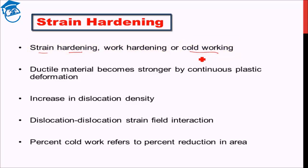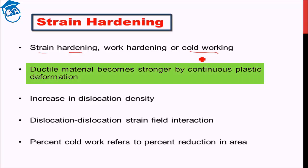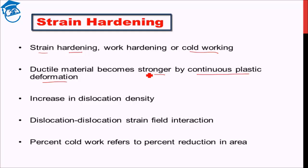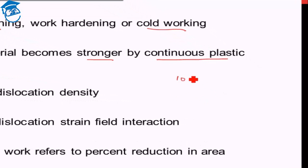The idea is that if you strain harden a ductile material, it will become stronger due to continuous plastic deformation. So continuous plastic deformation leads to strengthening of the body. But why should it lead to strengthening? When you start to deform a material, before deformation the material has a specific number of dislocations — in the order of 10⁴ to 10⁶ dislocation density.